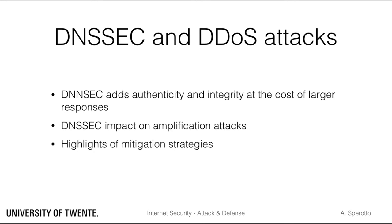Finally, we have studied a practical case of possible misuse of the DNS system for malicious goals. We have looked at DNSSEC, and the trade-off between adding authenticity and integrity to DNS, and the cost of larger responses, and how this can be misused in the context of reflection and amplification attacks. We also have seen possible mitigation strategies, such as blocking queries of type ANY and moving to elliptic curve cryptography, which is more secure than the currently used RSA scheme and also uses smaller keys.